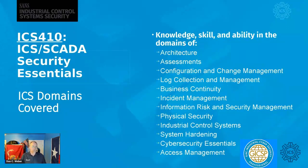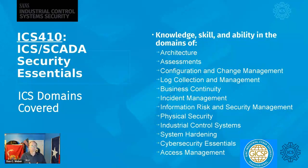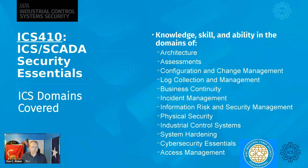All six of those days — the reason why we have six days is that we have to cover a lot of information. In order to do information security within a control environment correctly, the individuals making those decisions need to have knowledge and skills in all of the domains that we see here. We talk about architecture, assessments, system hardening, cybersecurity essentials, and the control environments themselves and the devices. We need to have knowledge of all of those domains.